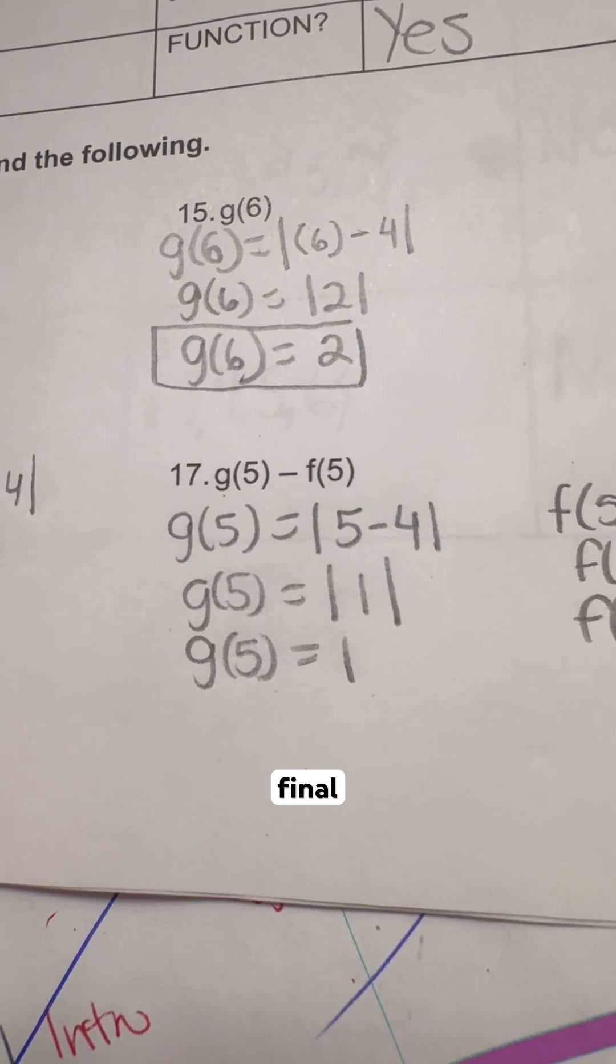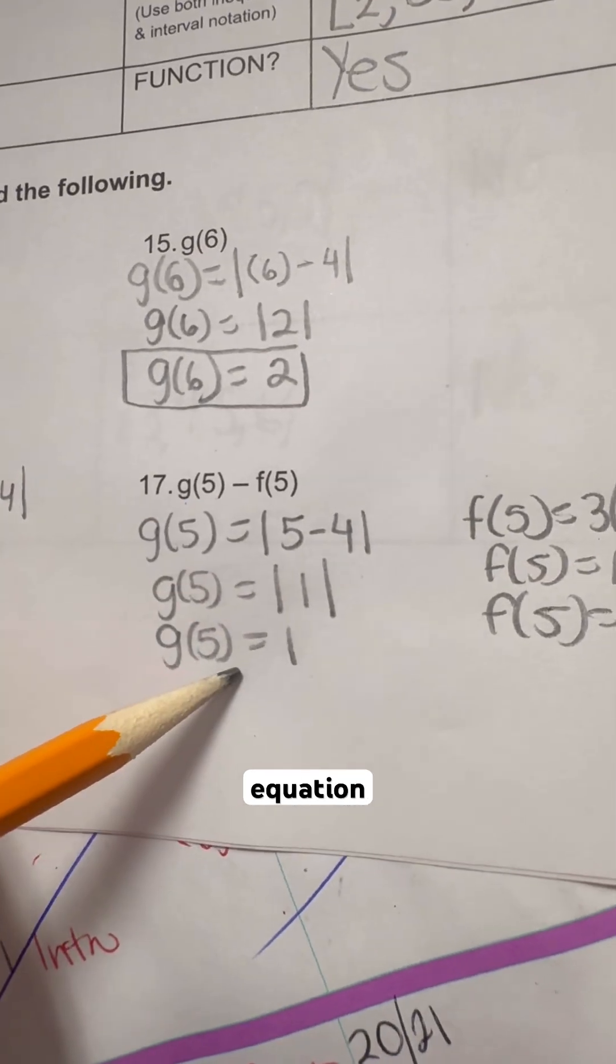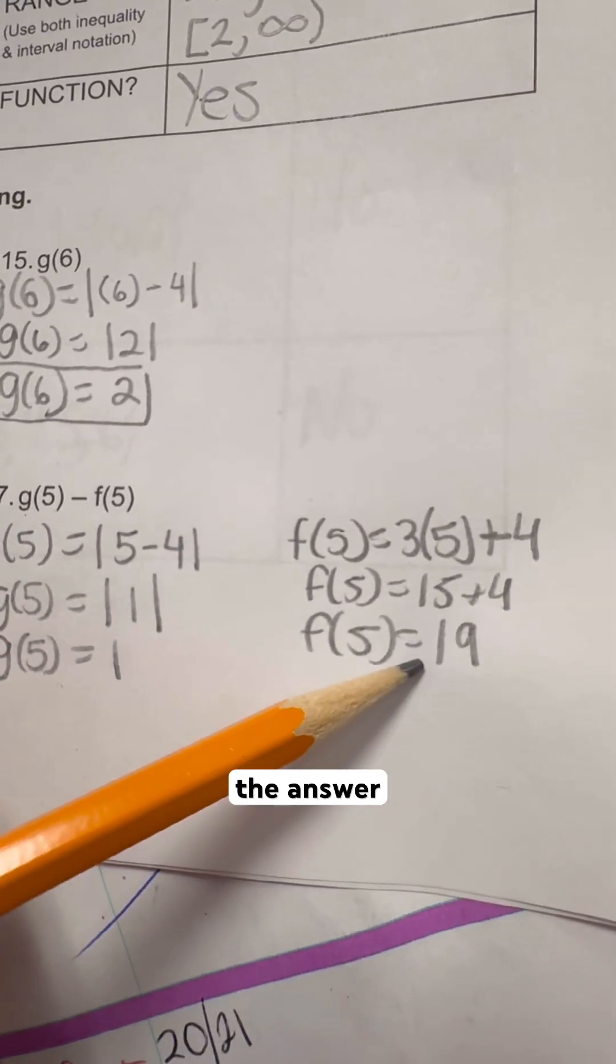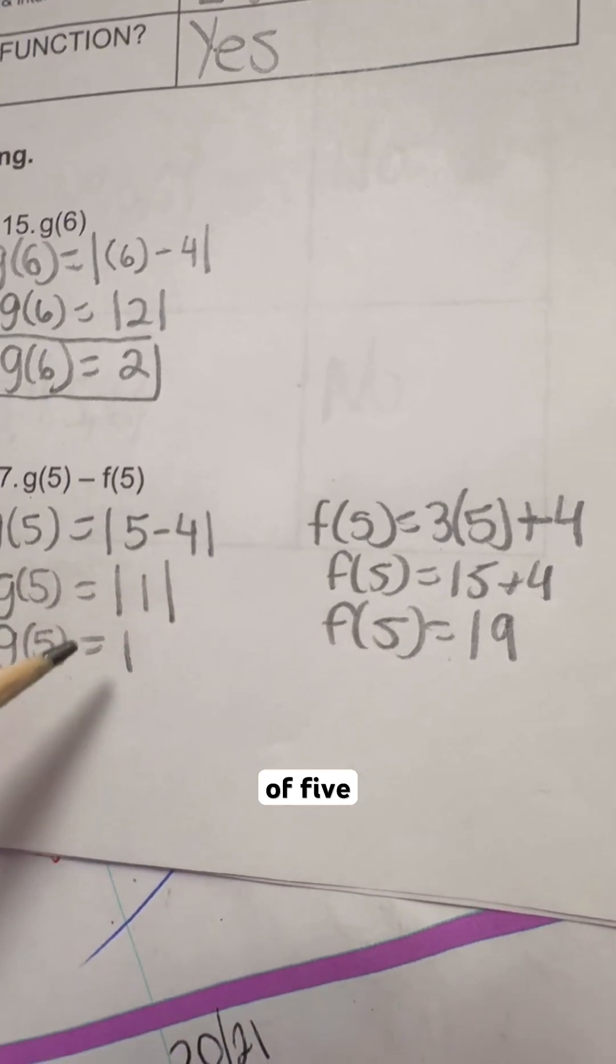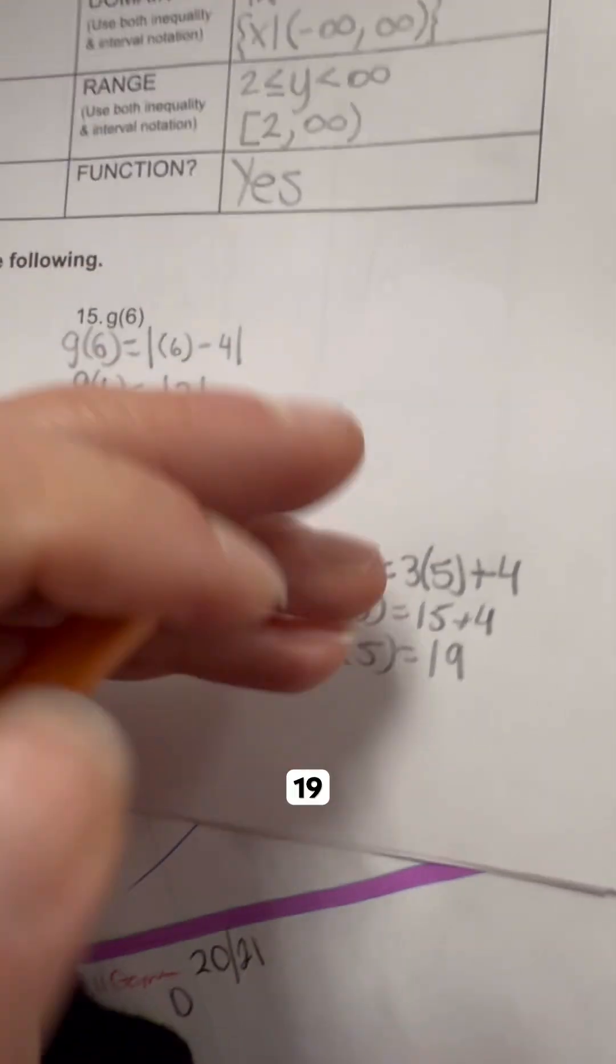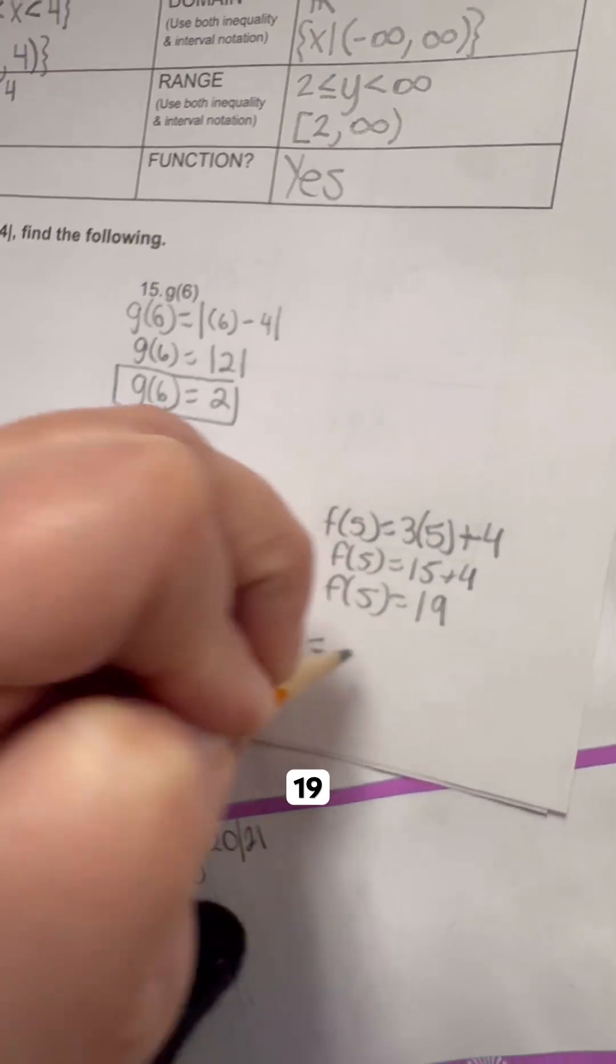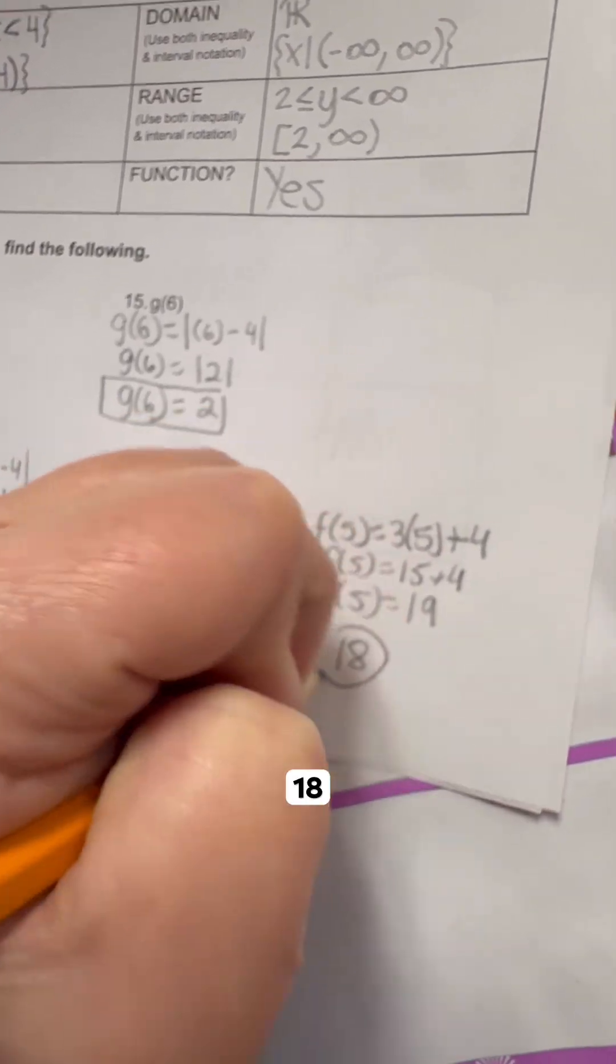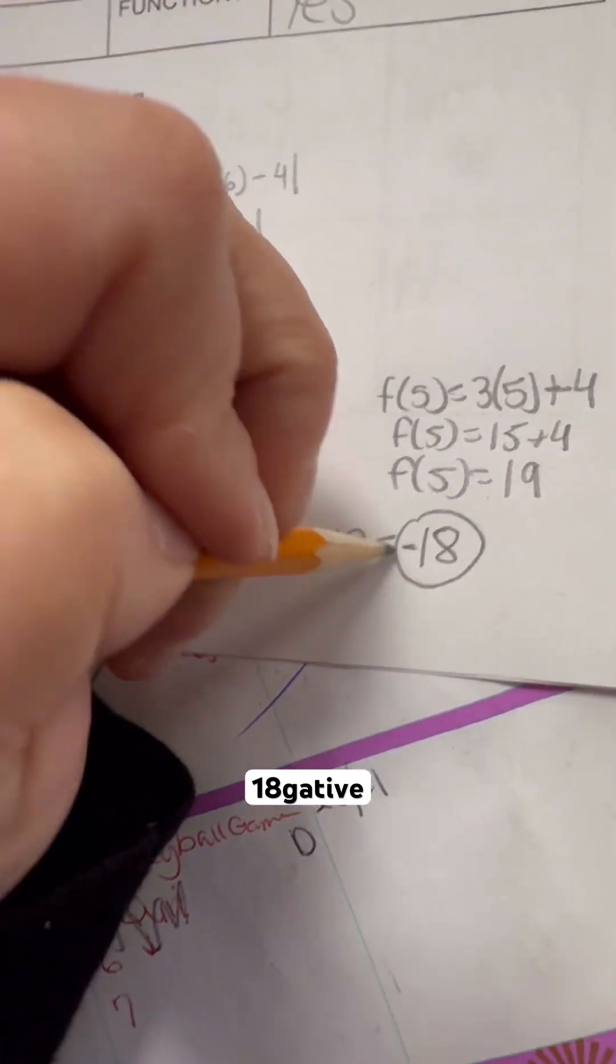Now for my final item, we take this equation, g of 5. We're going to subtract the answer from f of 5. So we're going to take 1 minus 19, and 1 minus 19 equals 18. So my answer for this one is, oh, negative 18. Negative 18.